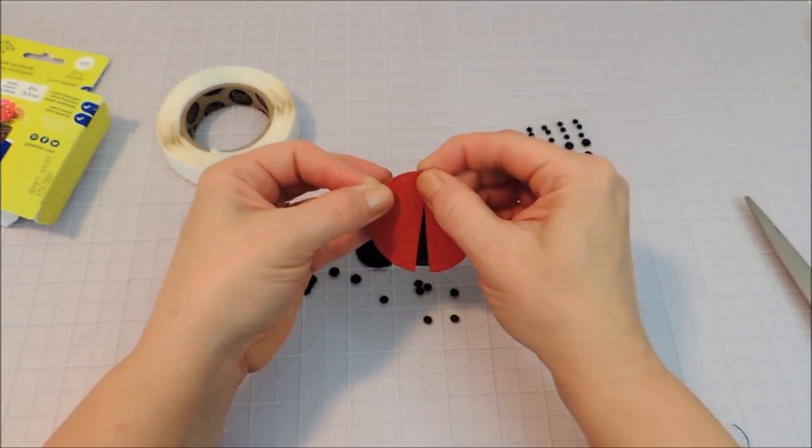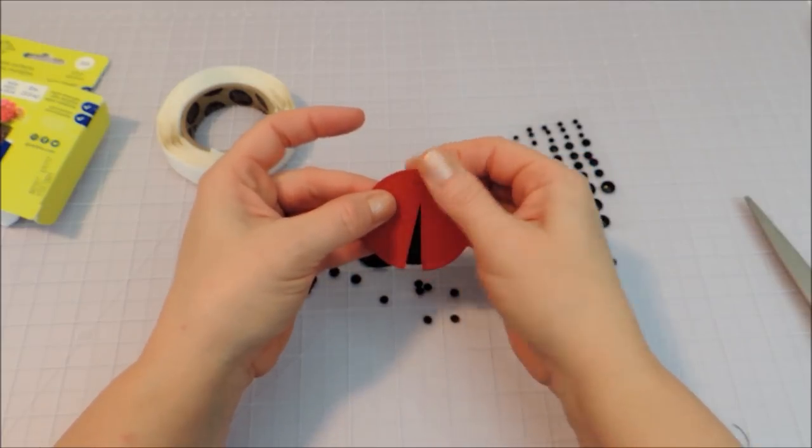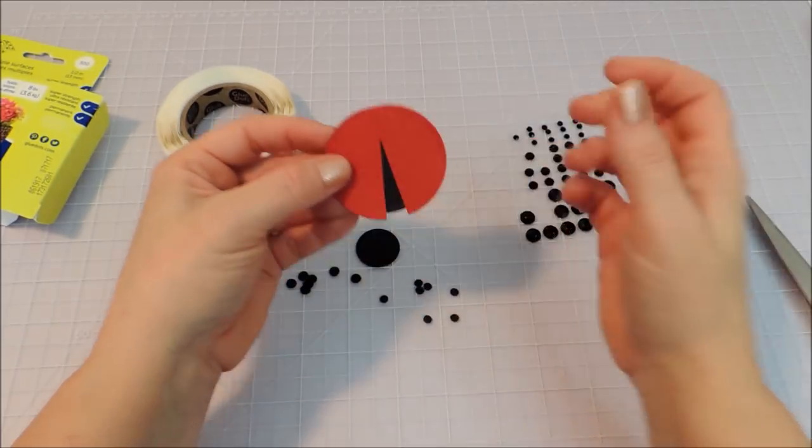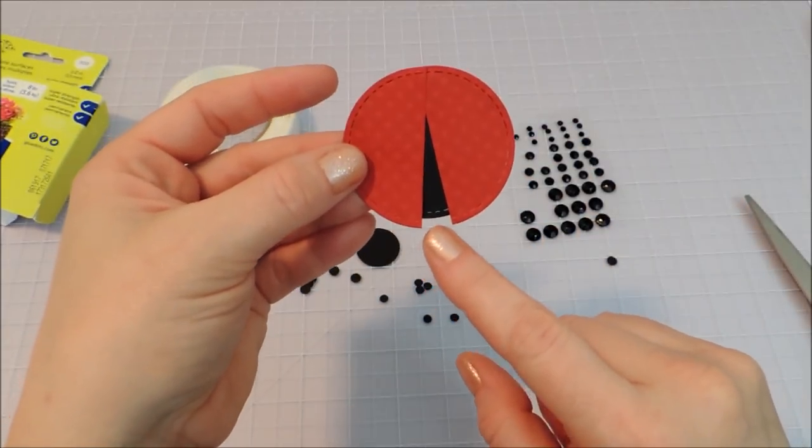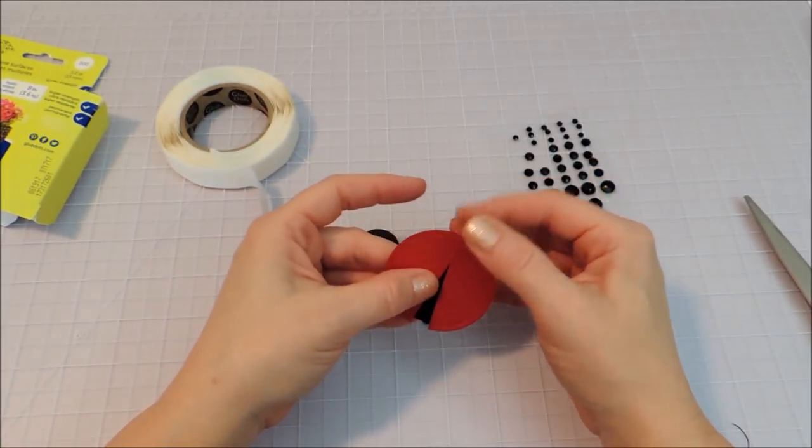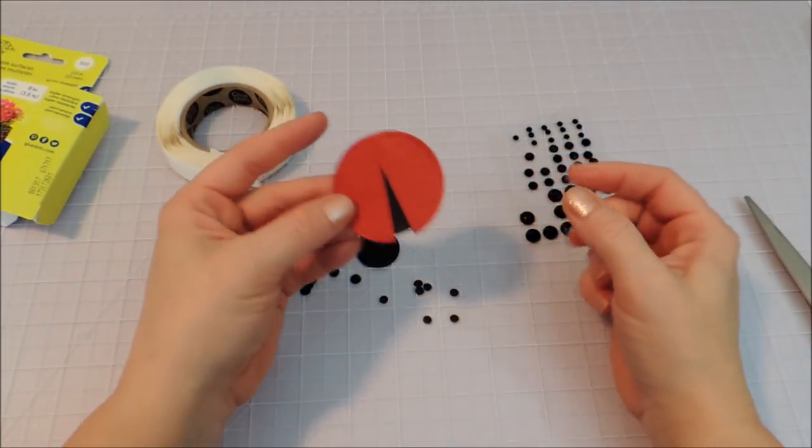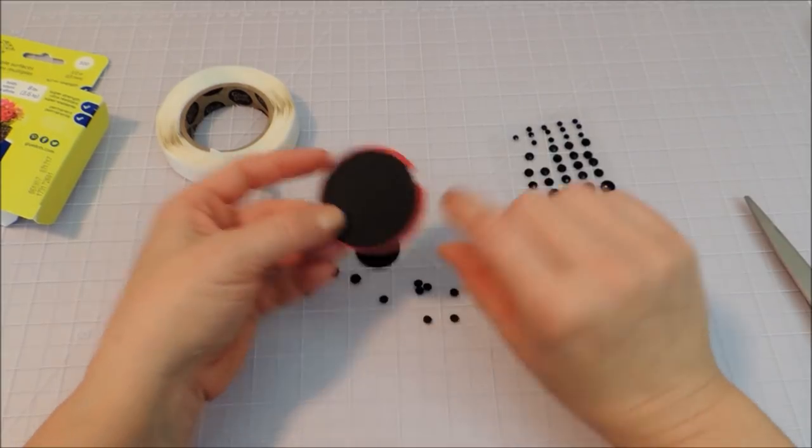Same thing on the other one. And you can see that black circle being just a little bit smaller, I think, looks right for the body of the ladybug.